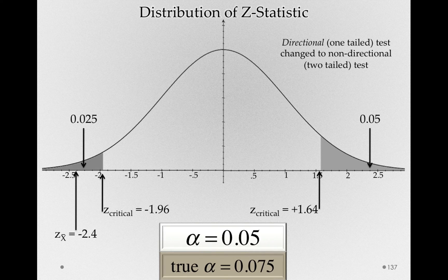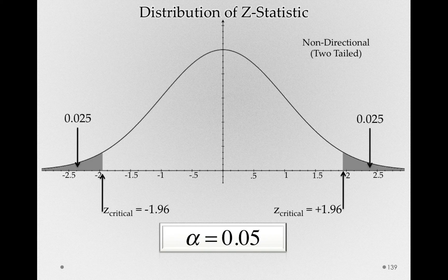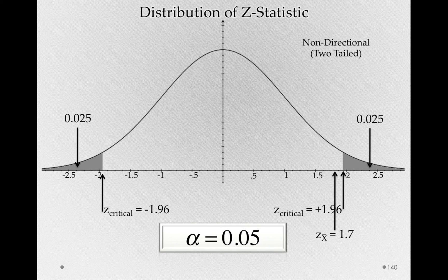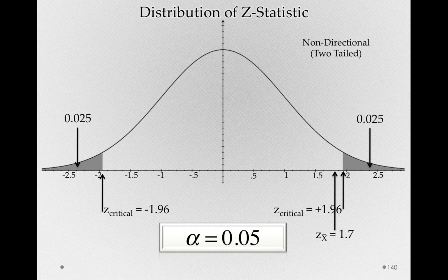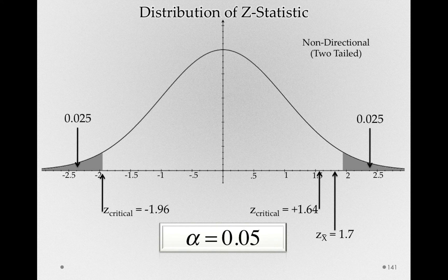Now let's look at another situation — one that's a little bit worse, and one that researchers should really know better about. Suppose you started off with a non-directional or two-tailed test, and you get a frustrating result right before you hit the critical value — a z sub x-bar at 1.7. Notice, if we allow this researcher or all researchers to change their mind and believe that they would have specified a directional test — and we're all good at confirmation bias, we can all convince ourselves that we really would have predicted a direction in this way — then this researcher might think that they can change their z-critical to positive 1.64.